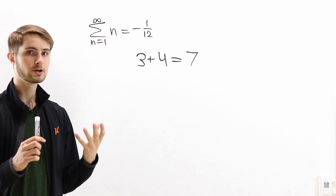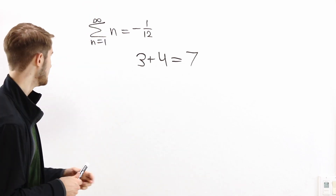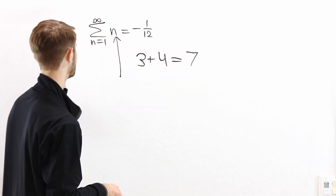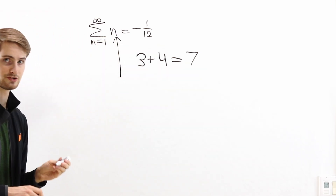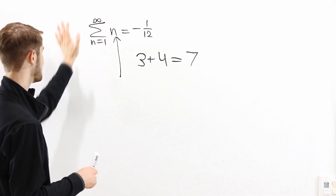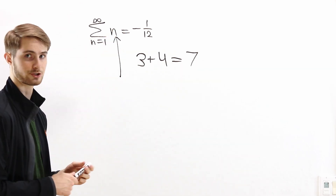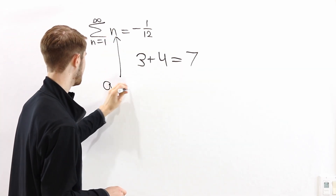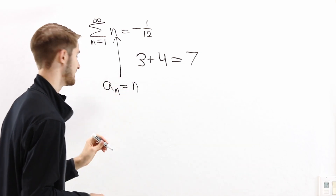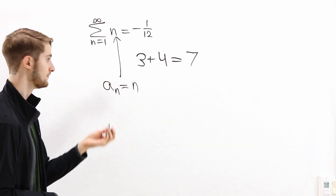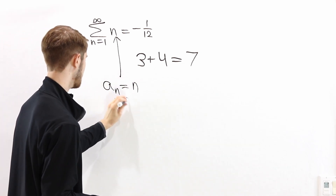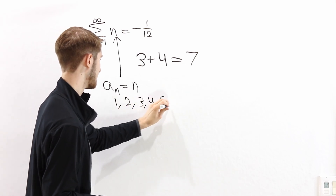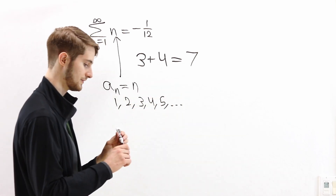The key component of an infinite sum is the sequence of terms in the infinite sum. So when we're talking about the sum of all natural numbers, we're looking at the sequence of terms a sub n equals n. So this sequence looks like 1, 2, 3, 4, 5, and so on.